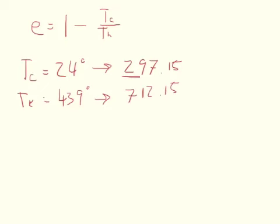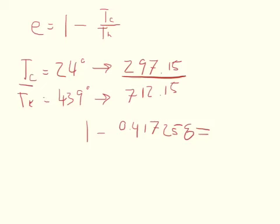And we can set these over each other, so we'd have TC over TH, and we'd subtract from 1. So 1 minus, and the ratio ends up being 0.417258. So 1 minus that is equal to 0.582742.